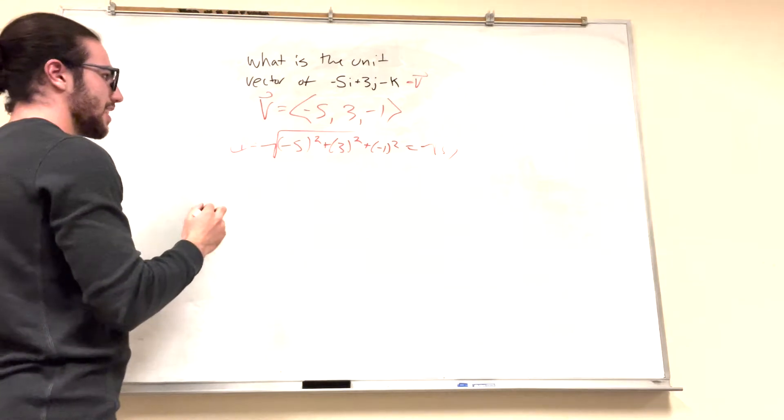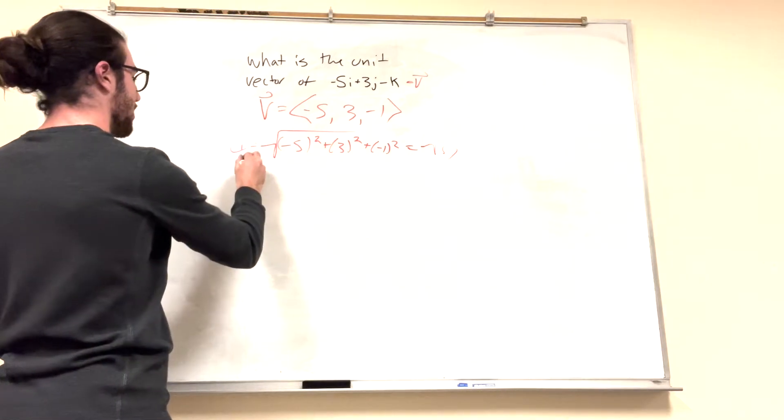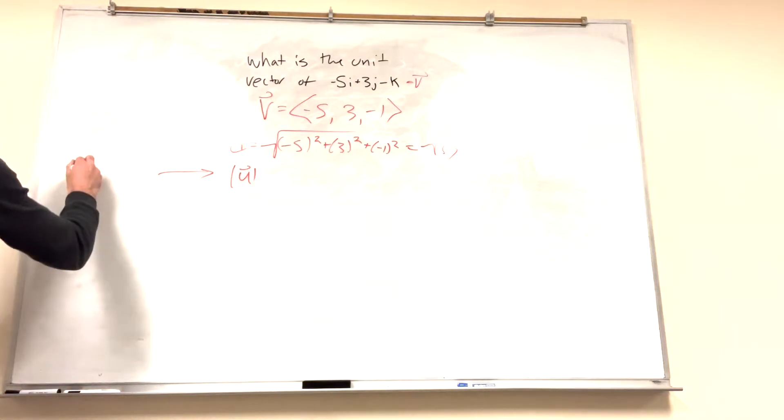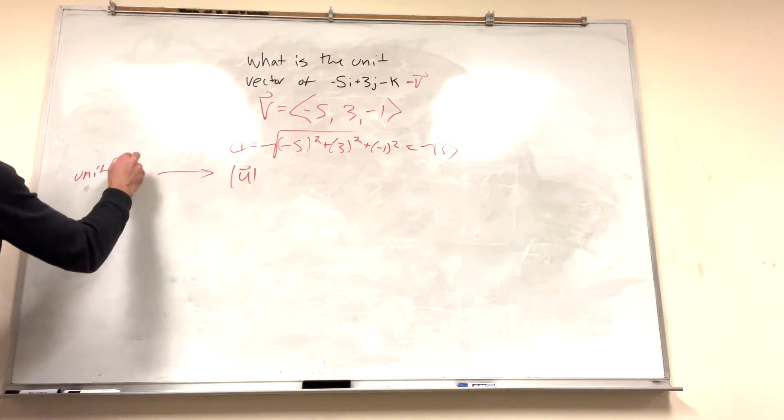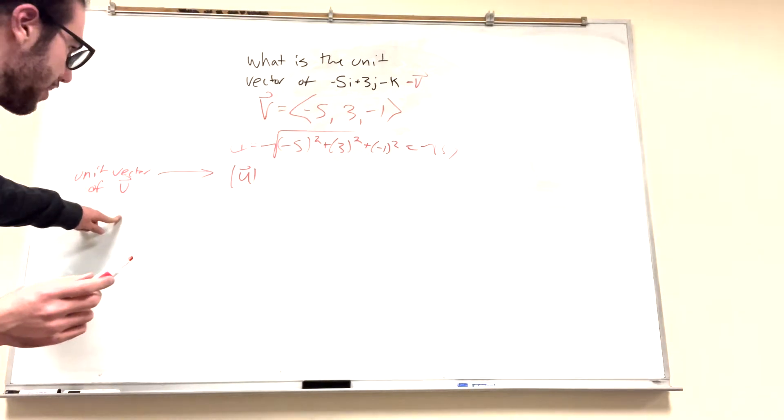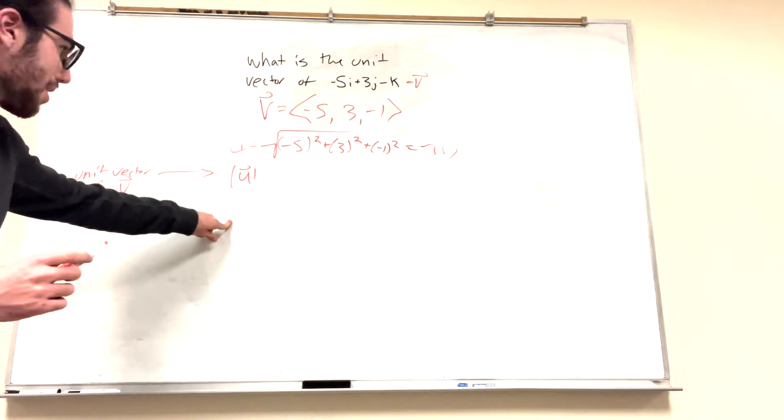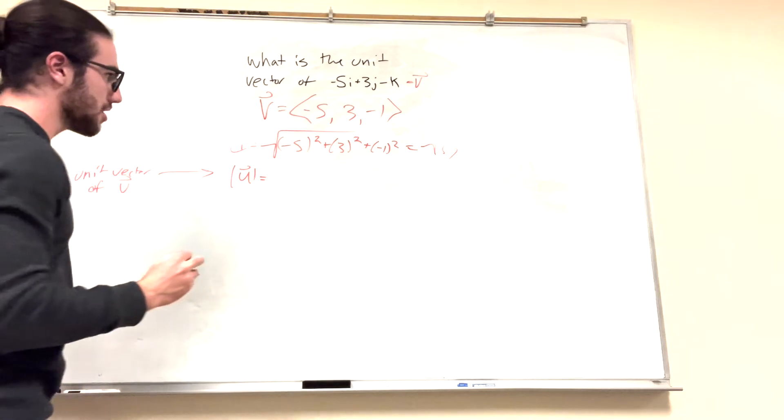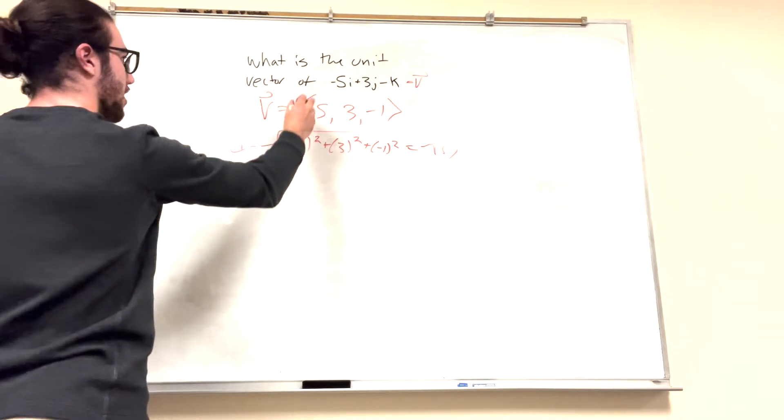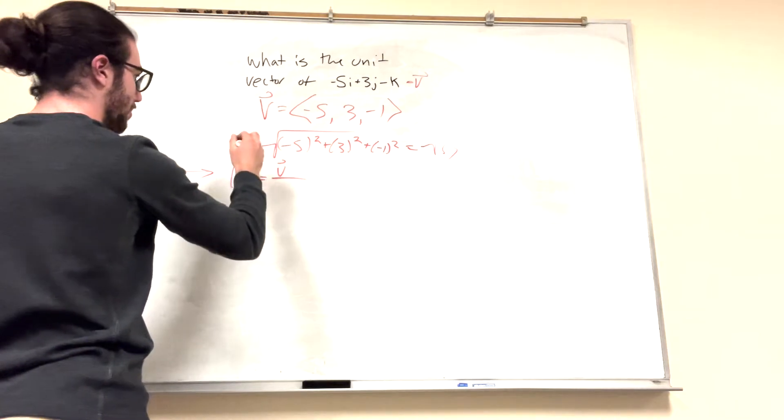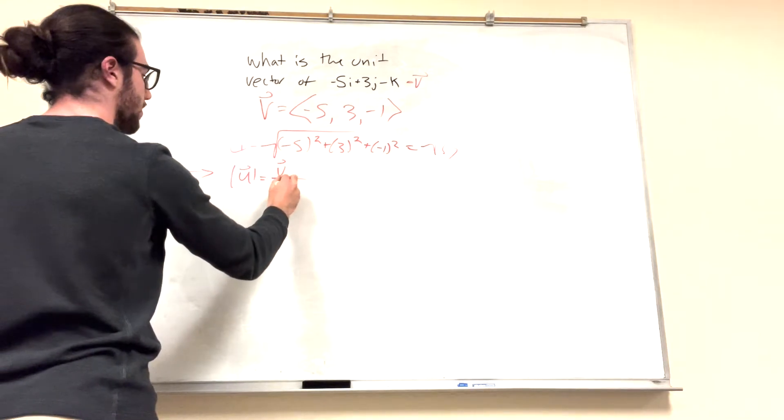Alright, so the unit vector is going to be, this is the unit vector of our vector here. Make sure you label your stuff. It makes it a lot easier when you know what you're working with. And you might end up with multiple unit vectors, so you might want to label them too. So, the unit vector equation for this is going to be our vector divided by the distance, or the magnitude.